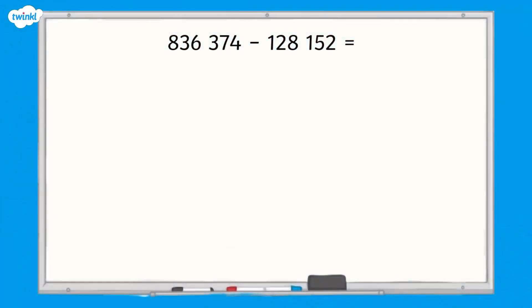Let's have a look at an example of using rounding to estimate an answer. Our calculation is 836,374 subtract 128,152.